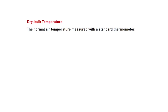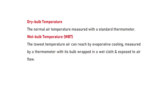Dry bulb temperature is measured in degrees Celsius and is plotted on the horizontal axis from left to right. The next parameter is wet bulb temperature — this is the temperature read by a thermometer with a wet cloth around the bulb, and it is affected by evaporative cooling. It indicates how much cooling can occur through evaporation, and it is always lower than or equal to the dry bulb temperature.